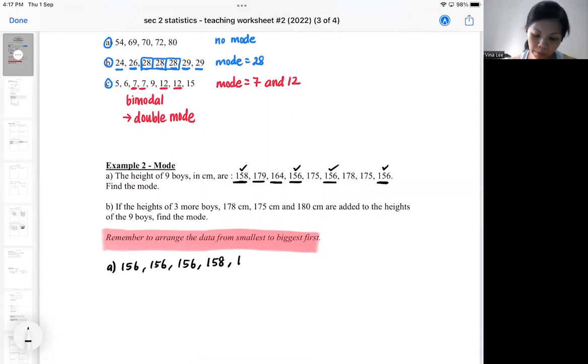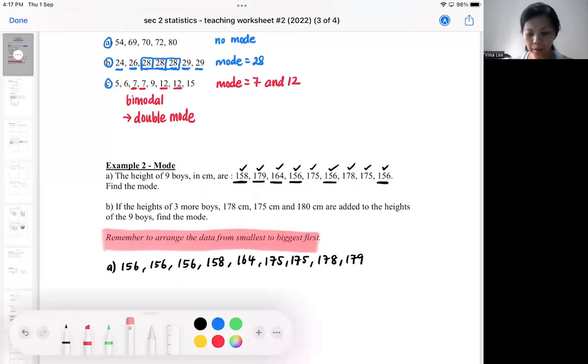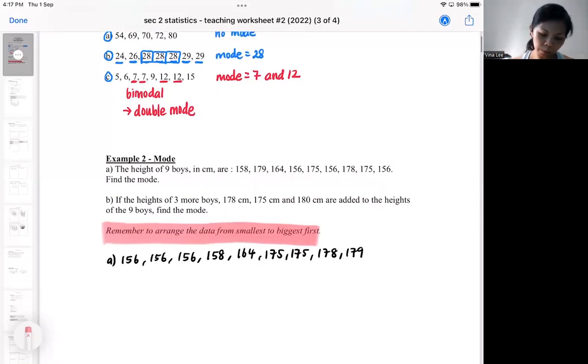I got two 175s, two boys who are 175. And 178. And 179. So once you arrange them already, it will be easier that you see which is the most popular. The most popular one will be this because it appears three times. So the mode is 156 cm because it appears three times.